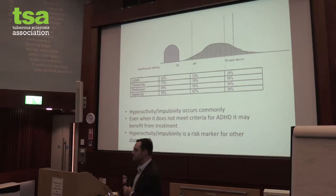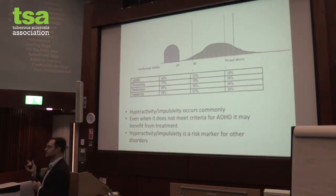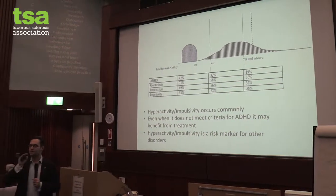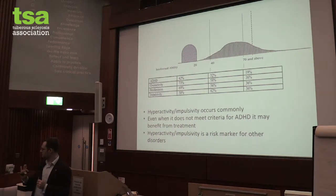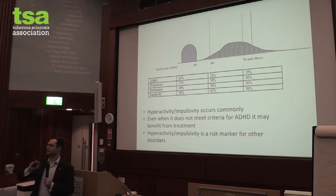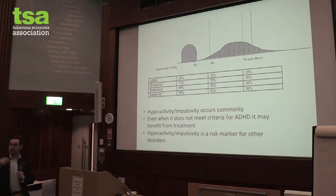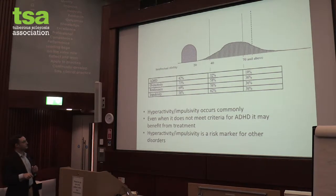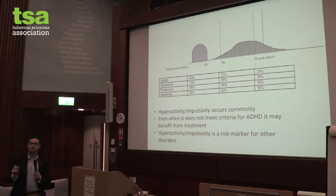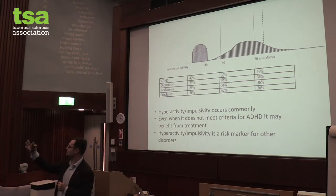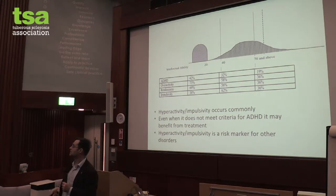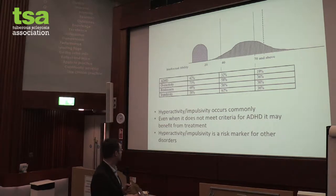Hyperactivity and impulsivity is a risk marker for lots of other challenges. When a child is more overactive or impulsive, there are many other things that might become problematic in a school setting, in a social setting, etc. Even when it doesn't meet criteria for ADHD, it might be important to think about what we can do to help a child be less overactive or less impulsive.